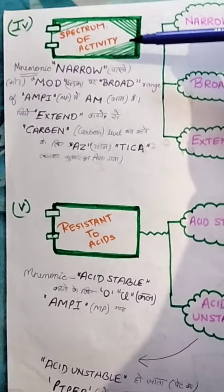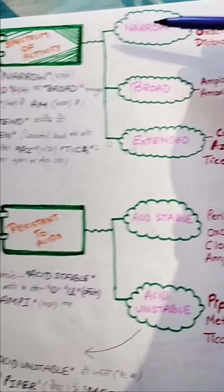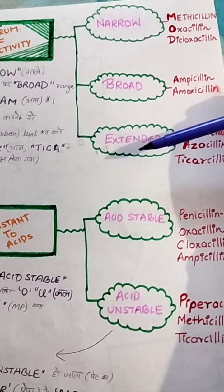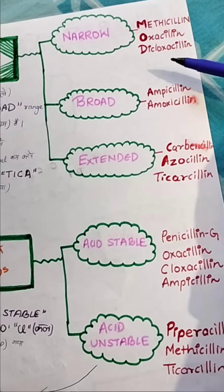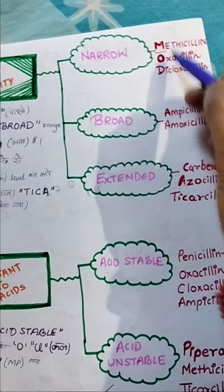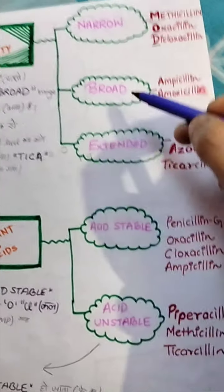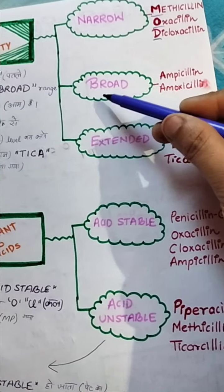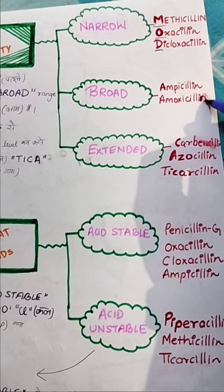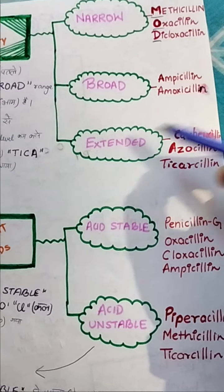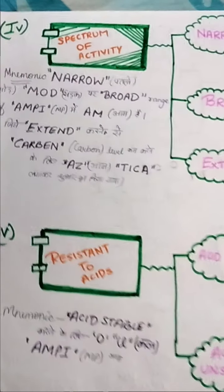The next category is spectrum of activity, divided into narrow, broad, and extended. In the narrow spectrum, we have methicillin, oxacillin, and dicloxacillin — remember MOD, like a road. Broad spectrum includes ampicillin and amoxicillin. Extended spectrum includes carbencillin, ajlocillin, and ticarcillin.